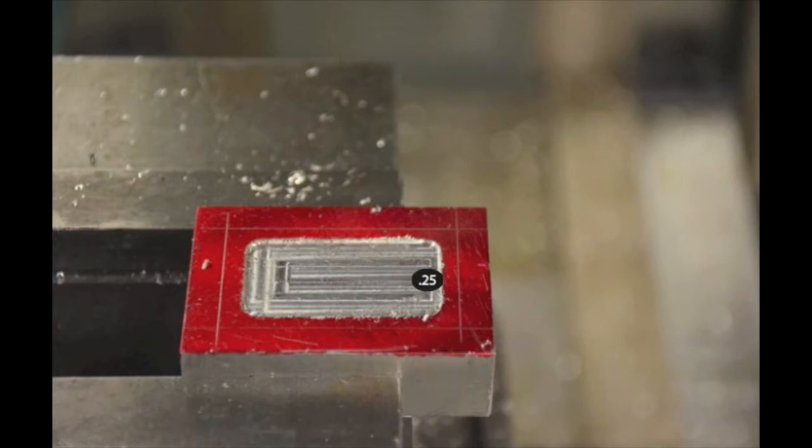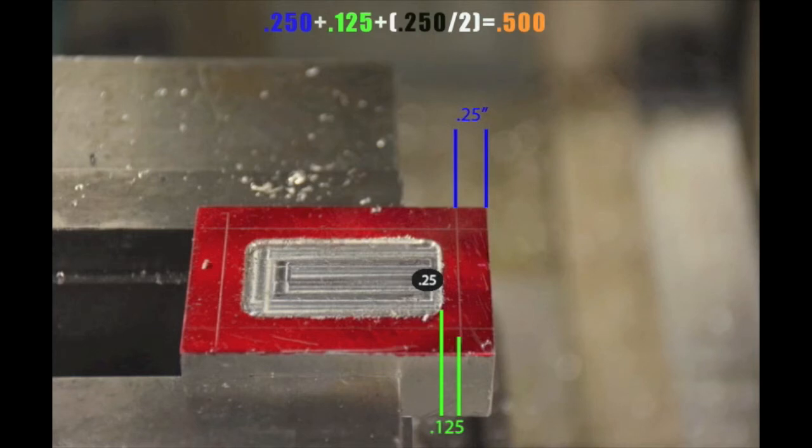You add the quarter inch wall plus the eighth inch rough cut and half of the end mill since we are zeroed on the center. This gives us half an inch, which is the distance from the edge of the block to the center of the end mill.